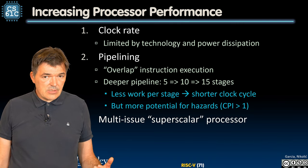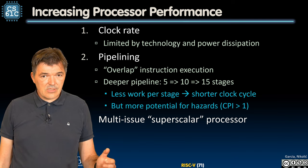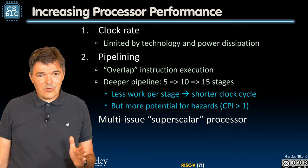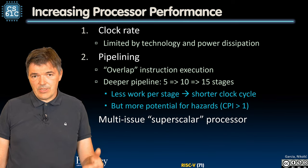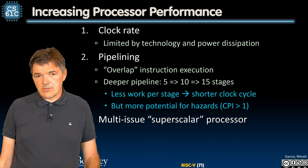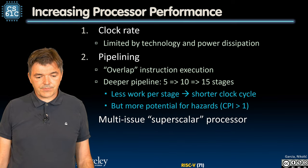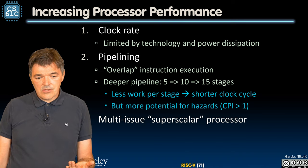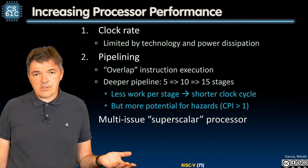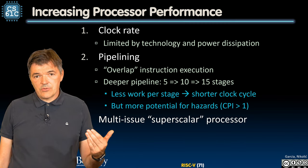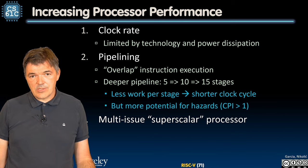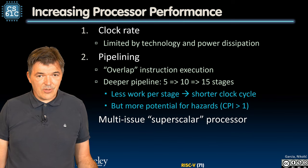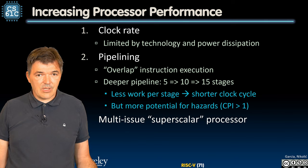The second option that often works in concert with clock rate increases is the concept of deeper pipelining. We have seen our five-stage pipeline, but we can break up the execution into smaller and smaller chunks. People have built pipelines that are 10 stages deep or 15 stages deep. Intel processors went up to 20 stages deep at some point. The idea is to do less work in each cycle, to have less logic depth, to go through fewer logic gates, so we can have a shorter clock cycle. That enables us to either run at a higher frequency, or if we are limited by power, to drop the supply voltage and run at the same clock frequency but with lower power. However, the deeper the pipeline, the higher the chance we are going to run into hazards, so our CPI is naturally going to get higher than one.